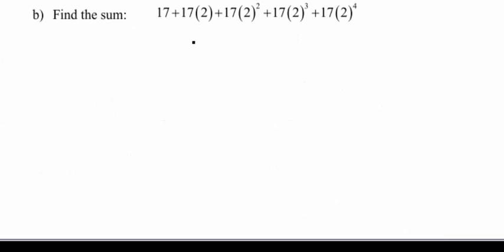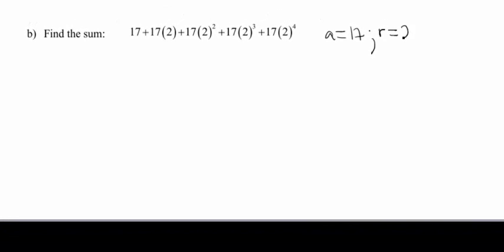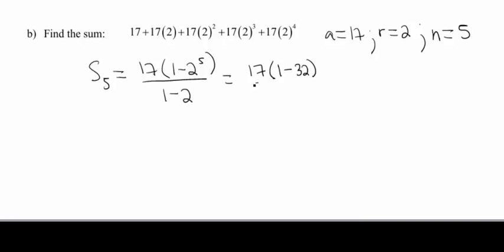All right, so my A is 17, my R is 2, since each time we're multiplying by 2. And my N in this case is gonna be 5, because there are five terms. So my sum S sub 5 is going to be 17 times 1 minus 2 to the fifth, all divided by 1 minus 2. So again, this seems kind of like an obnoxious number, and it probably is. So let's see what we get. So 17, and then we're gonna have 1 minus 32, all divided by negative 1. And then when I go ahead and crunch that number out, I get 527.